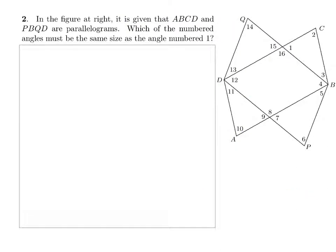Okay, so number two here, we're trying to find which of the numbered angles must be the same size as the angle numbered one. And then in the figure, we have ABC is a parallelogram, and so is ABCD and PBQD. So I'm going to actually, let's go ahead and outline those, just so we can kind of see them. So this right here is a parallelogram. Okay. And then, this right here is a parallelogram. So we want, what is equal to angle one right there.